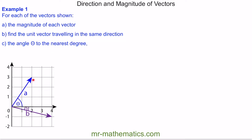We'll begin with vector A. We're going to write vector A using i and j form. You can see we go two in the i direction, so this will be 2i, and then three in the j direction. So 2i plus 3j. We could also write this in column vector form as (2, 3).